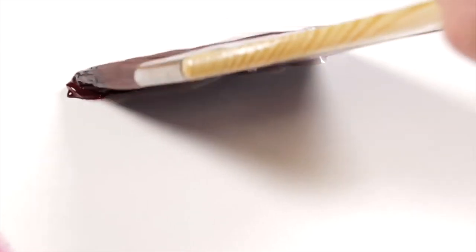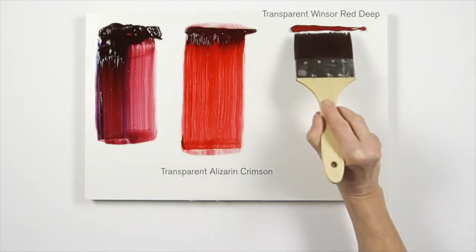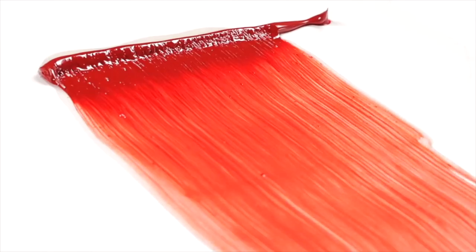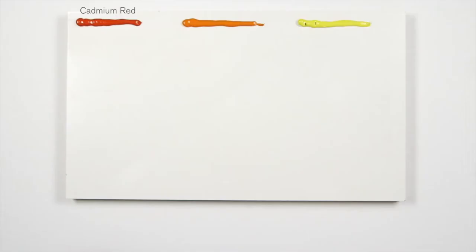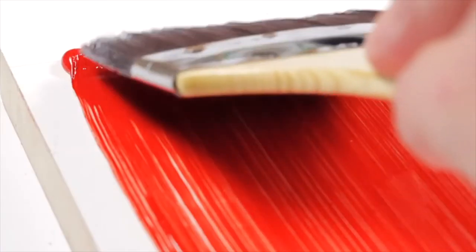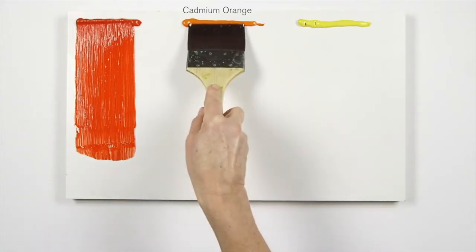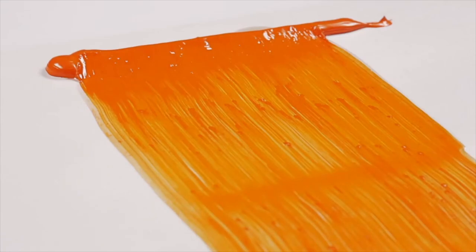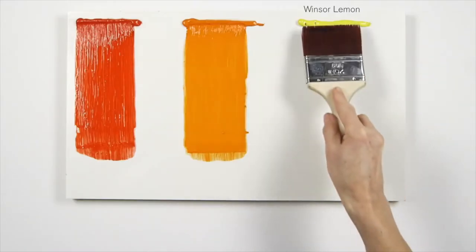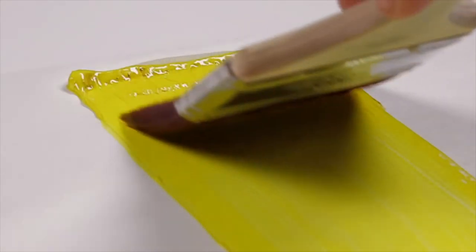Complete your palette with transparent alizarin crimson and transparent Winsor Red Deep. Now Cadmium Red, Cadmium Orange and finally Winsor Lemon. Be sure to leave plenty of space between colours.